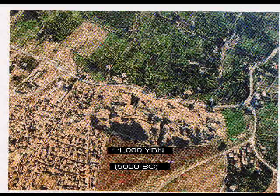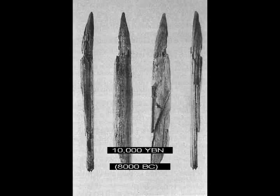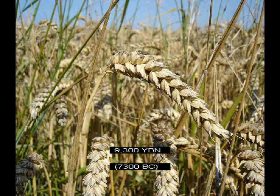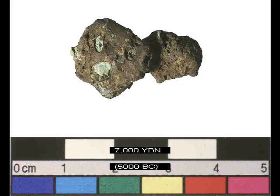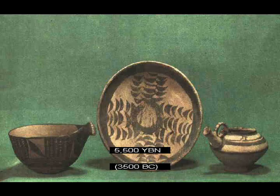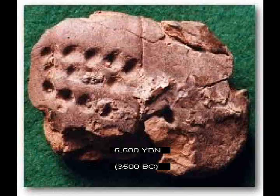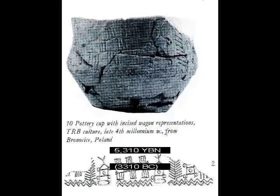First city. Bow and arrows. Wheat grown. Squash grown. Metal casting — copper. The wheel. Writing. Cuneiform tablets. First numbers. Animal-pulled vehicles.